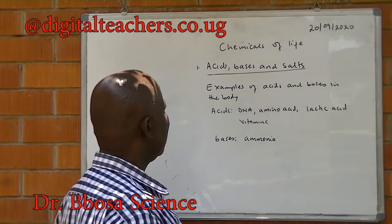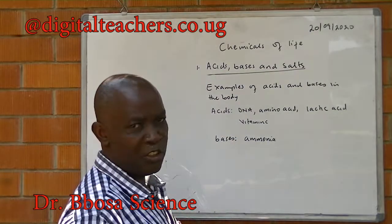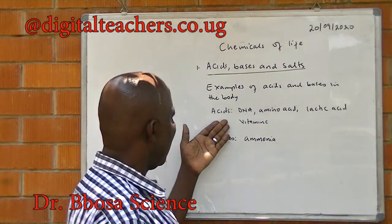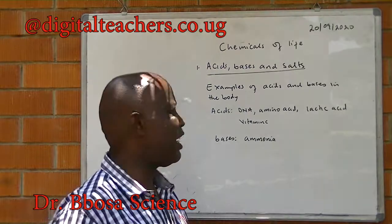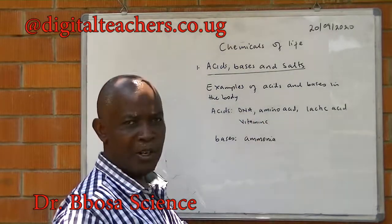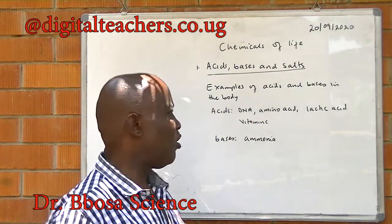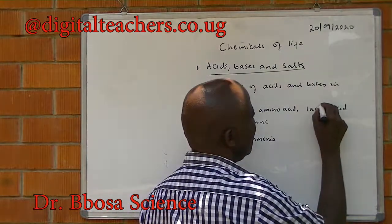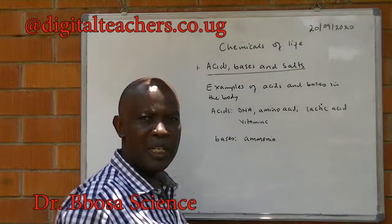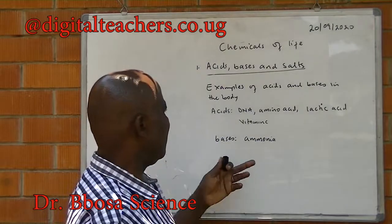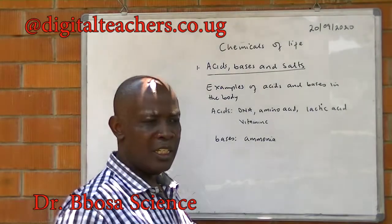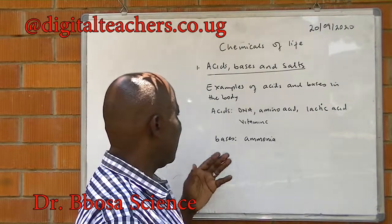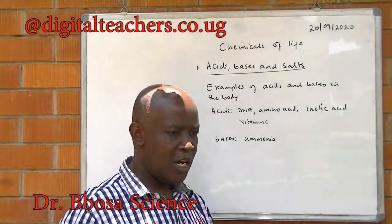Examples of acids in the body include DNA, the hereditary material; amino acids, the building units of proteins; lactic acid, produced during anaerobic respiration; and vitamin C, a useful vitamin in the body. For bases, we have ammonia.